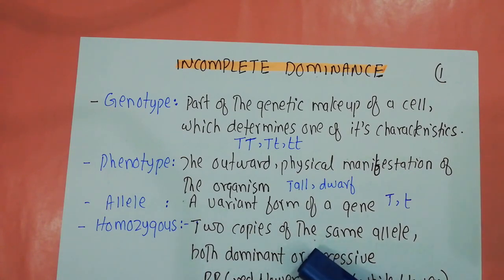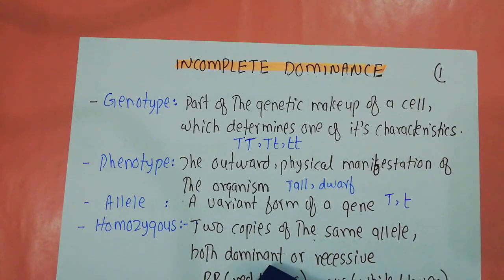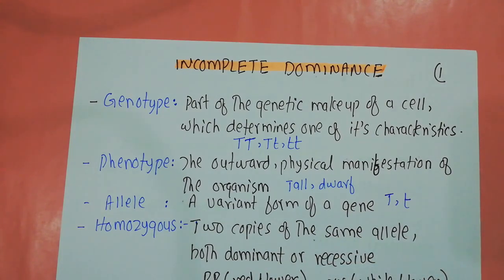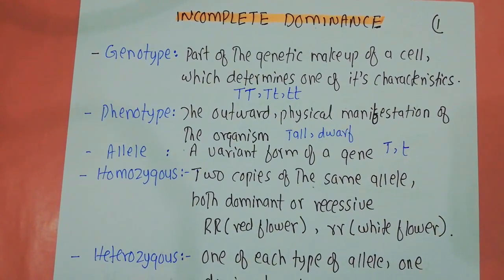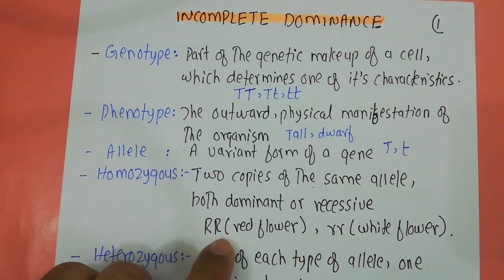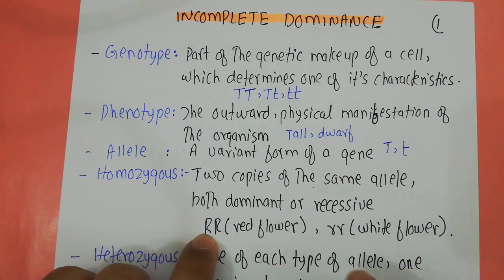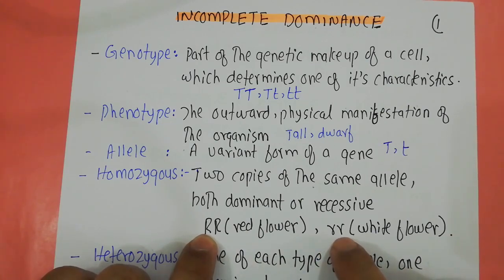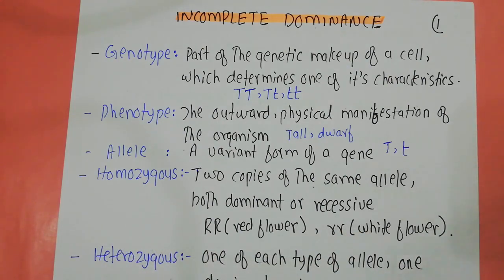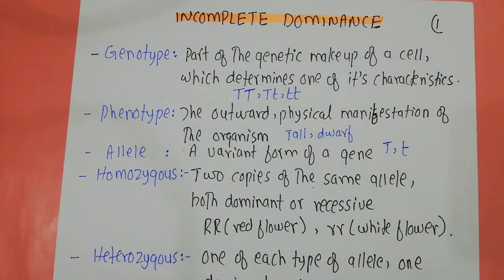Homozygous: when two copies of the same allele, whether they are dominant or recessive, are present, that particular condition is known as the homozygous condition. For example, capital R and capital R — this is a pair of alleles and both are identical to each other. Similarly, small r and small r — both alleles in this pair are identical. So when both alleles are identical, whether dominant or recessive, this is known as the homozygous condition.